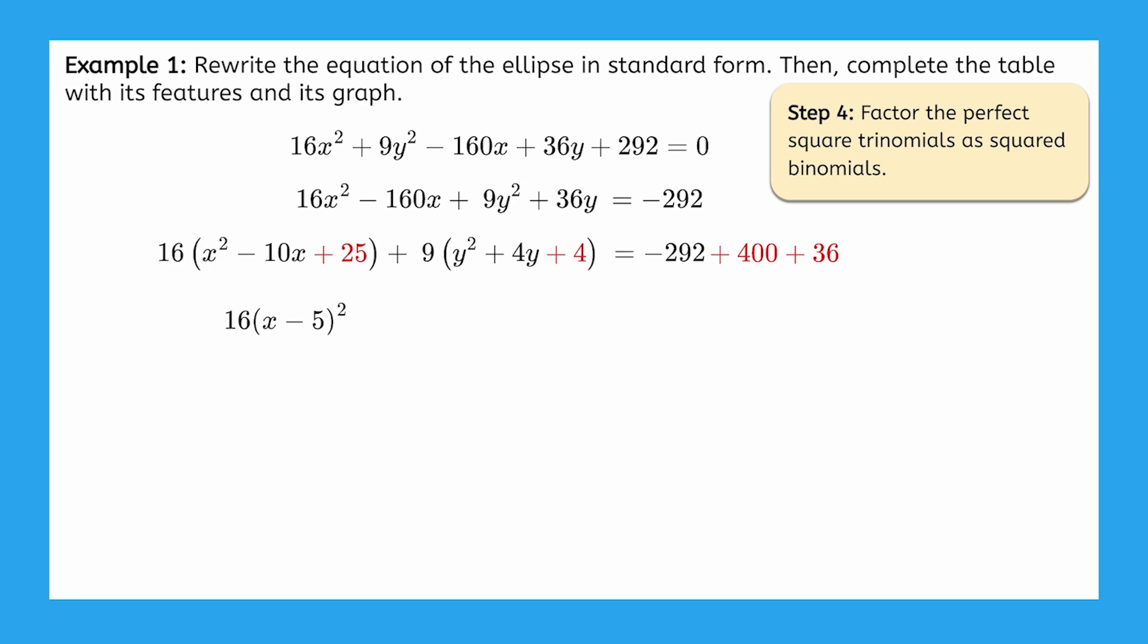And let's not forget the 16! Similarly, the second square is y plus 2 squared, with the 9 in front. We can also simplify the right side of the equation by adding up negative 292 plus 400 plus 36, which gives us 144.